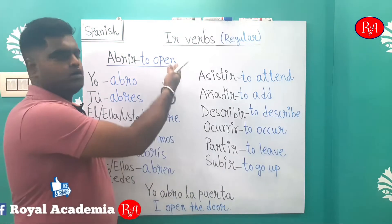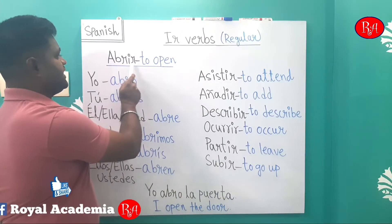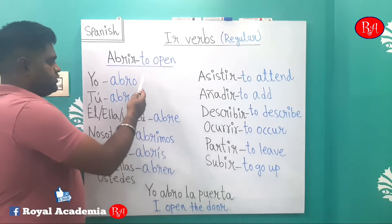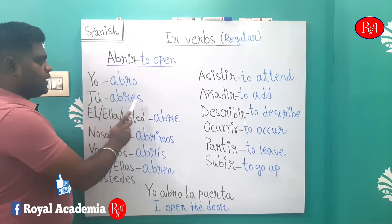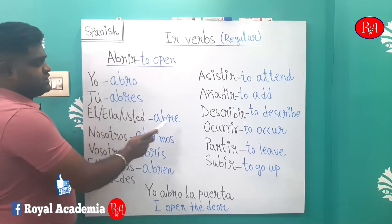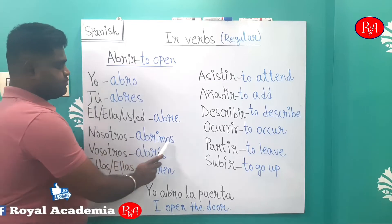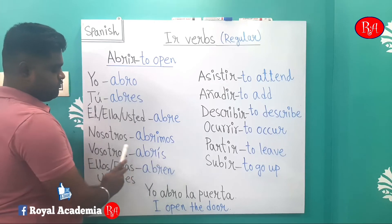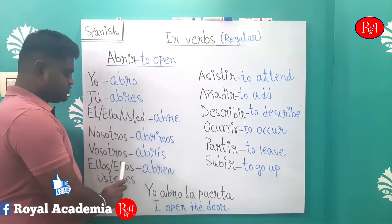As you can see, today we have chosen the verb 'abrir'. The verb ends with -IR, that means 'to open'. Abrir is a regular -IR verb. The conjugation: yo abro, tú abres, él/ella/usted abre, nosotros abrimos, vosotros abrís, ellos/ellas/ustedes abren.